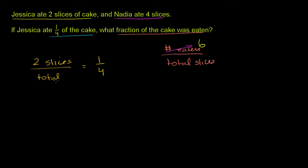So whatever the total, two divided by whatever the total number was is equal to 1 fourth. And so there's a bunch of ways you can do this. One way is we can cross multiply.